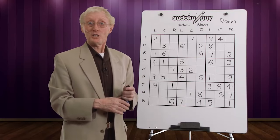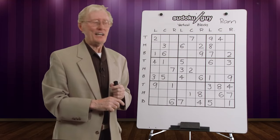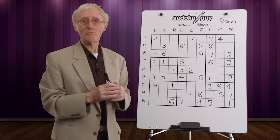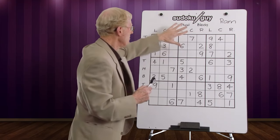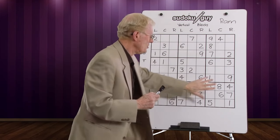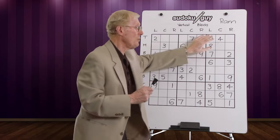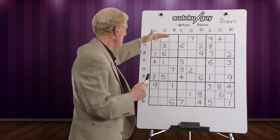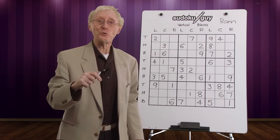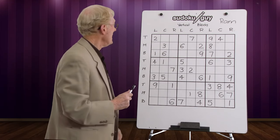Hi, I'm Robin, the Sudoku Guy. Welcome to the second lesson, and this is another free lesson. Last lesson we looked at horizontal blocks, where we looked at these blocks of nine across this way, this way and this way, and we were using the principle of top, middle, bottom to work out where the numbers went. Each of these blocks has a top and a middle and a bottom. Now today, we're going to introduce you to another step to solve these puzzles, and it's called the LCR.